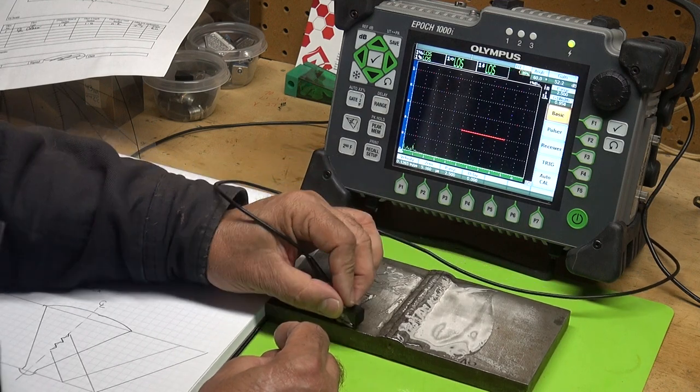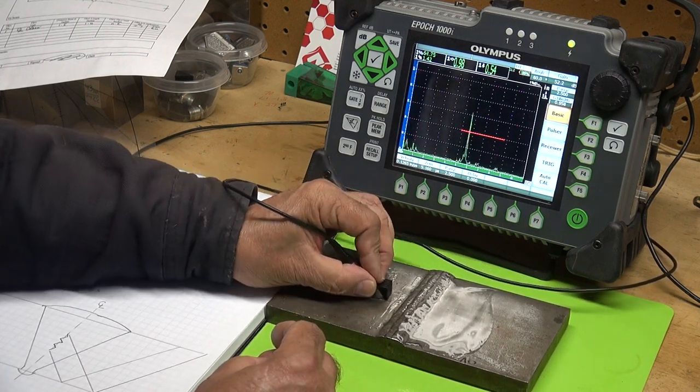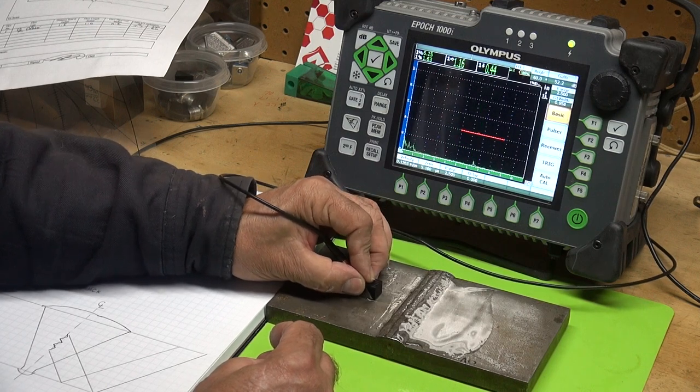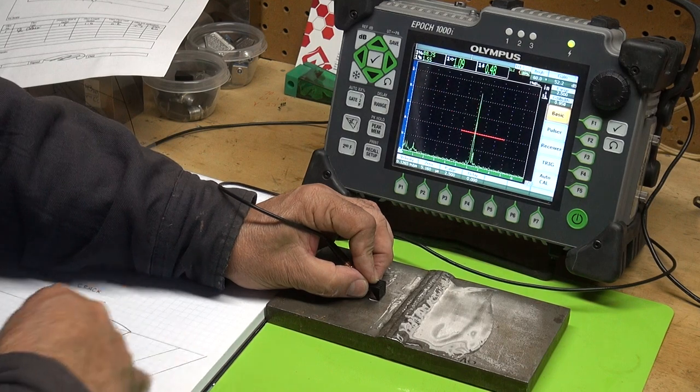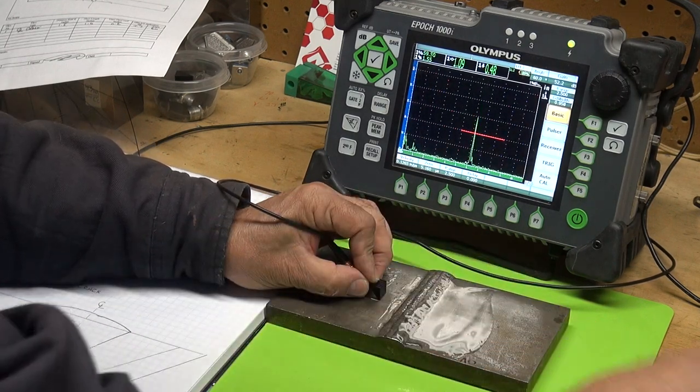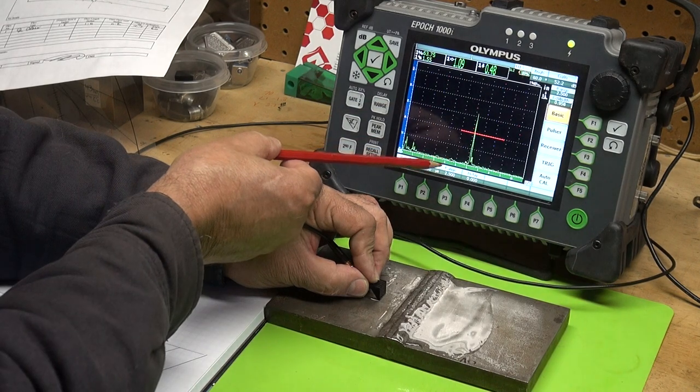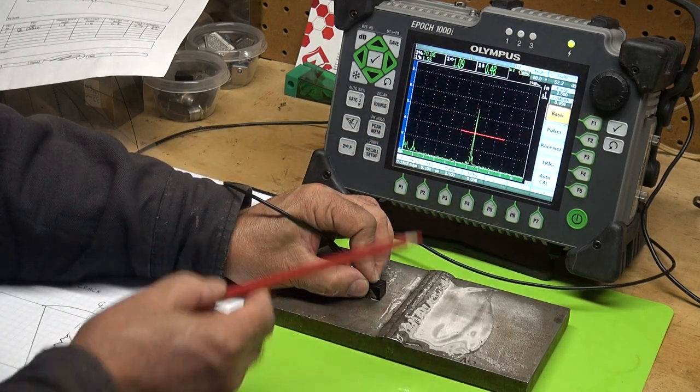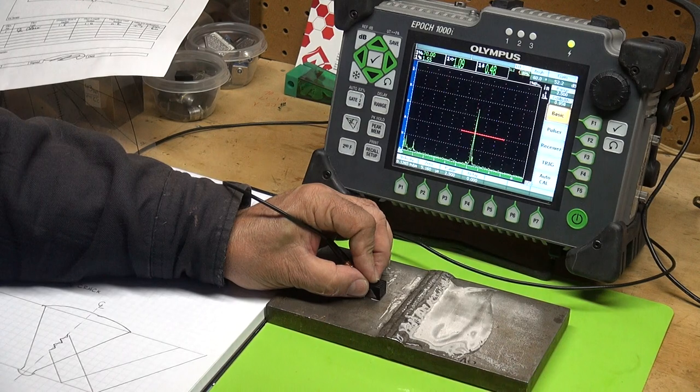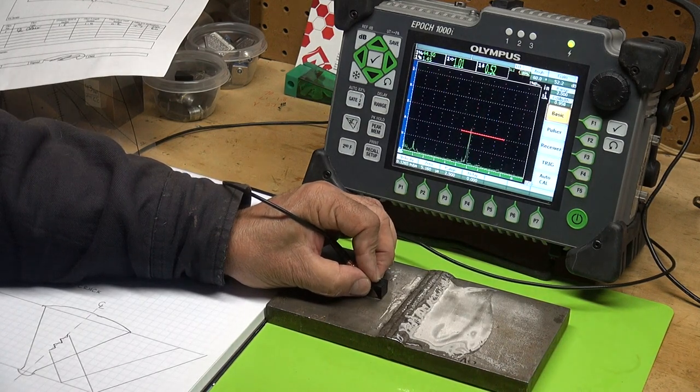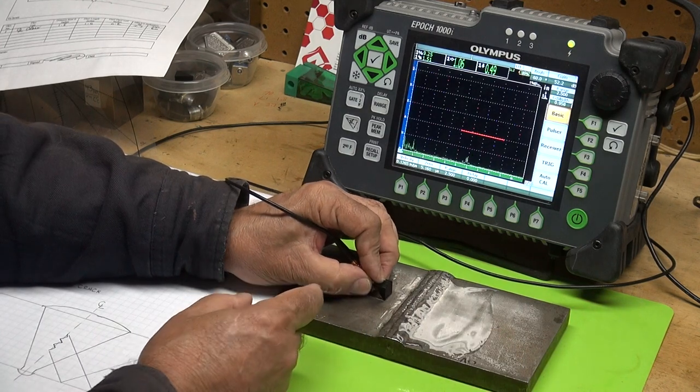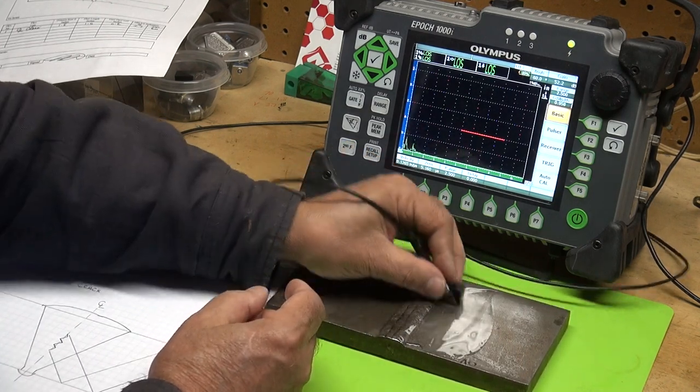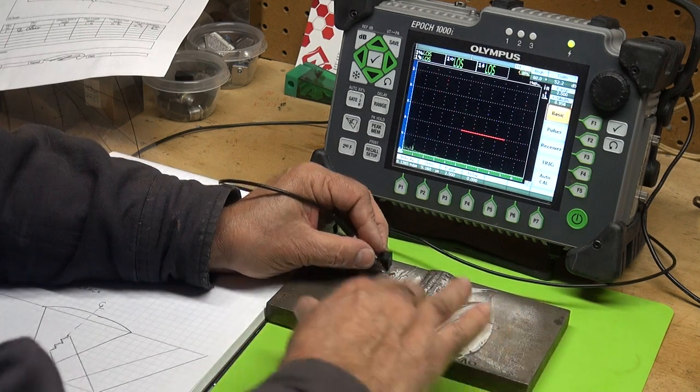Let's take a look at this weld. Right there I'm seeing there's a centerline crack. I'm catching it on my second leg. This is the ID, mid wall is the ID or the bottom of the weld, and this is the top of my weld. Right there is my crack. Let me do a transverse scan.